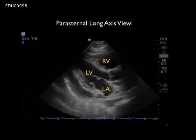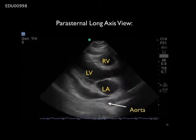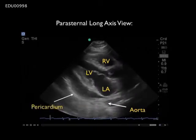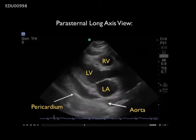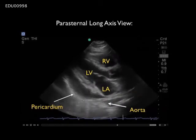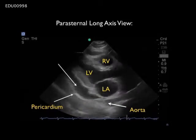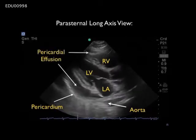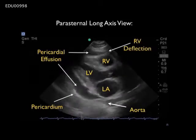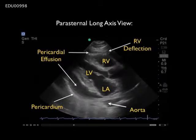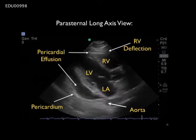Now that we've learned how to determine if fluid is pericardial versus pleural, let's look at this video clip. We identify the descending aorta and posterior pericardial reflection and confirm the fluid is anterior to both — and therefore pericardial. The next step is to look at the right ventricle for diastolic deflection that could indicate early tamponade physiology. We can see fluid both anterior and posterior to the heart, and we notice a serpentine deflection of the right ventricle that is worrisome for early tamponade physiology. This patient's blood pressure was noted to be decreasing on serial evaluations.